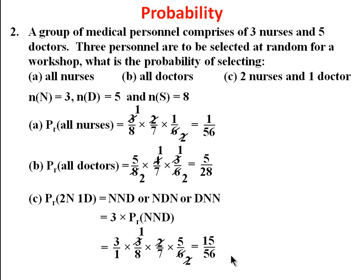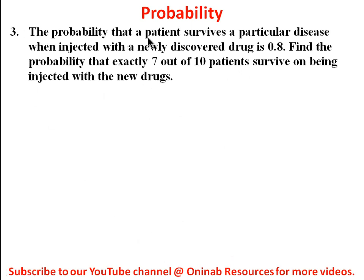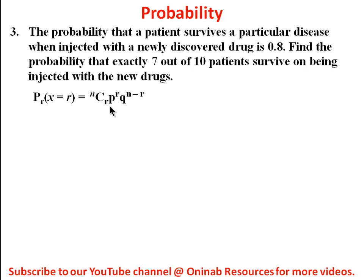That's the end of the second problem. For the third problem: the probability that a patient survives a particular disease when injected with a newly discovered drug is 0.8. Find the probability that exactly seven out of ten patients survive on being injected with the new drug. We are going to use a binomial probability distribution method because the number involved is too large.